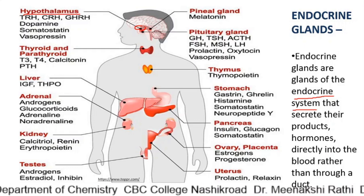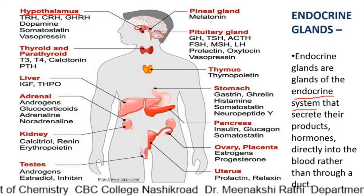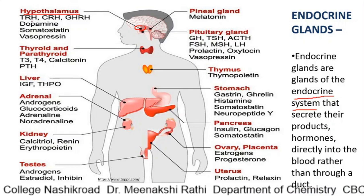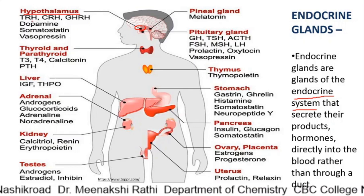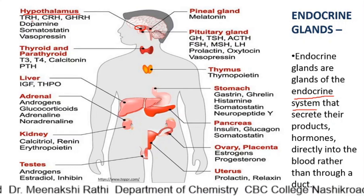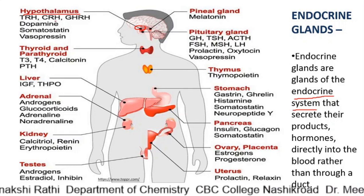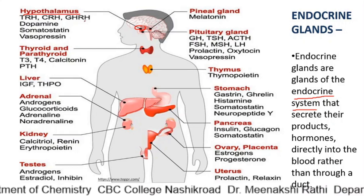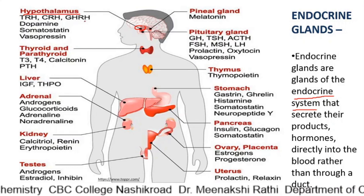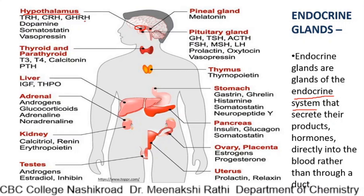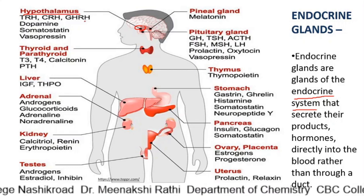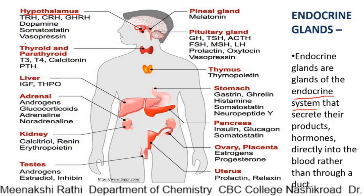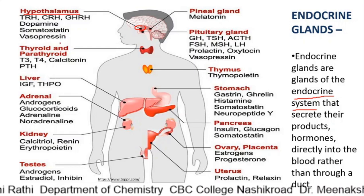The hypothalamus produces mainly six releasing factors or hormones: TRH (thyrotropin-releasing hormone), CRH (corticotropin-releasing hormone), GHRL (growth hormone releasing hormone), dopamine, somatostatin, and vasopressin.